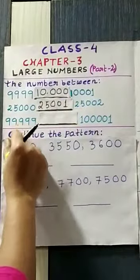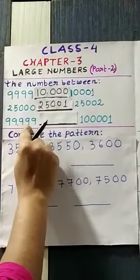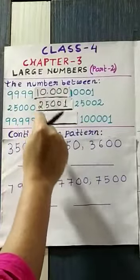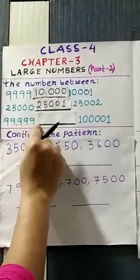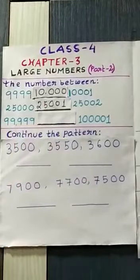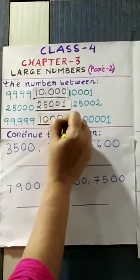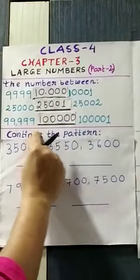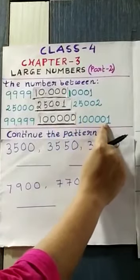Now we will go to the third one. It is 99,999. So what will be the after number? We have to add 1 with 99,999. So we get 1,00,000 — that is the smallest number of 6 digits. And after 1,00,000, the next number is 1,00,001.